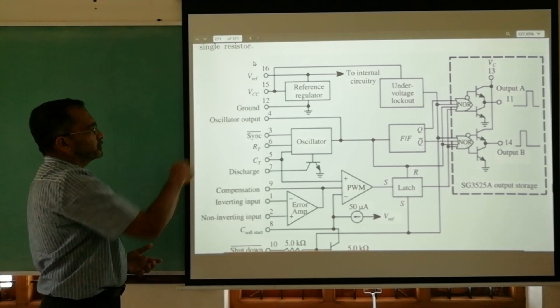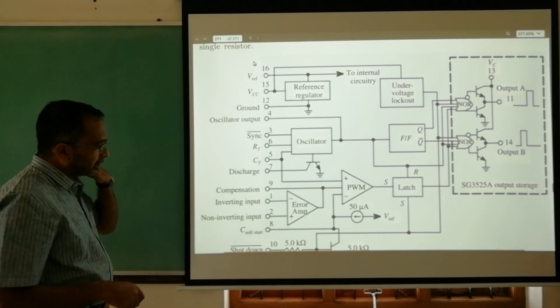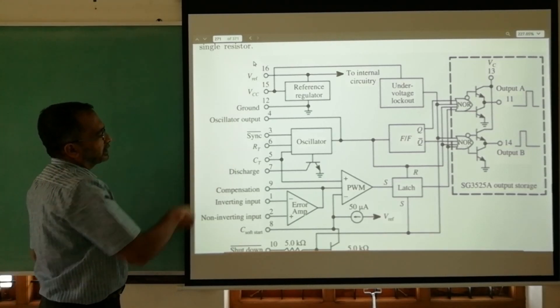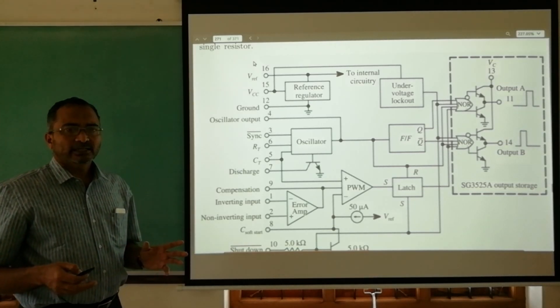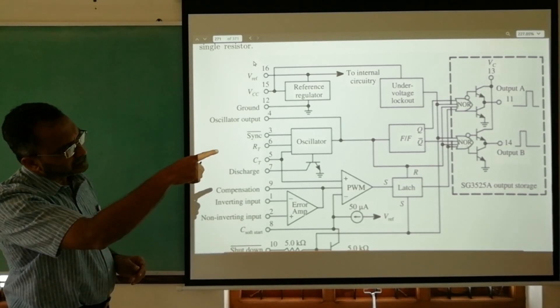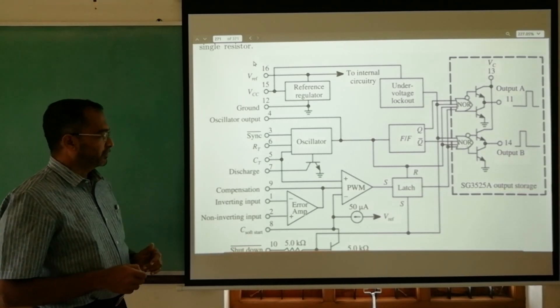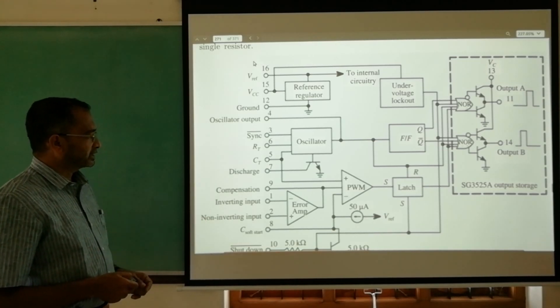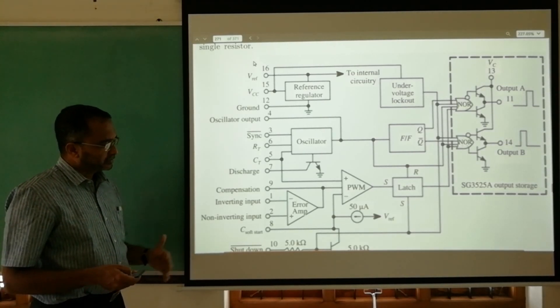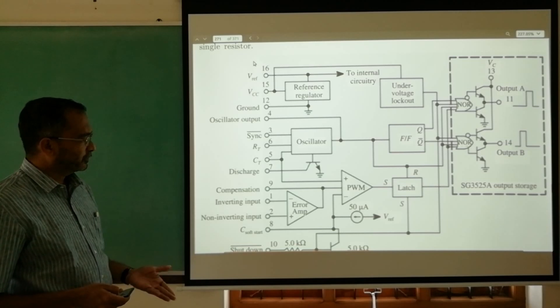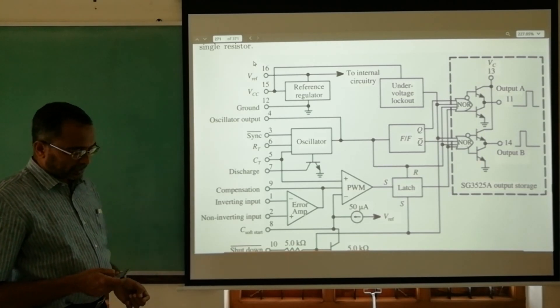RT/CT with discharge pins are used for varying the time period of the waveform, that is the frequency of output waveforms. Compensation pin, inverting, non-inverting pins, etc. are used accordingly when we need other associate circuitry. Soft start, instead of avoiding abrupt start, a capacitor connected with pin number 8 is used.